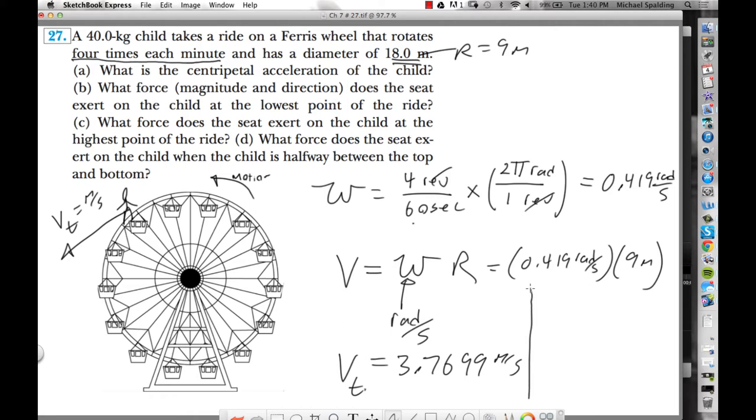Part A. Now we're ready to calculate some answers. Question A wants the centripetal acceleration. Centripetal acceleration is v² over r. Plug in your v which we just solved for. Plug in your r, and you get a centripetal acceleration of about 1.58. That's the centripetal acceleration.